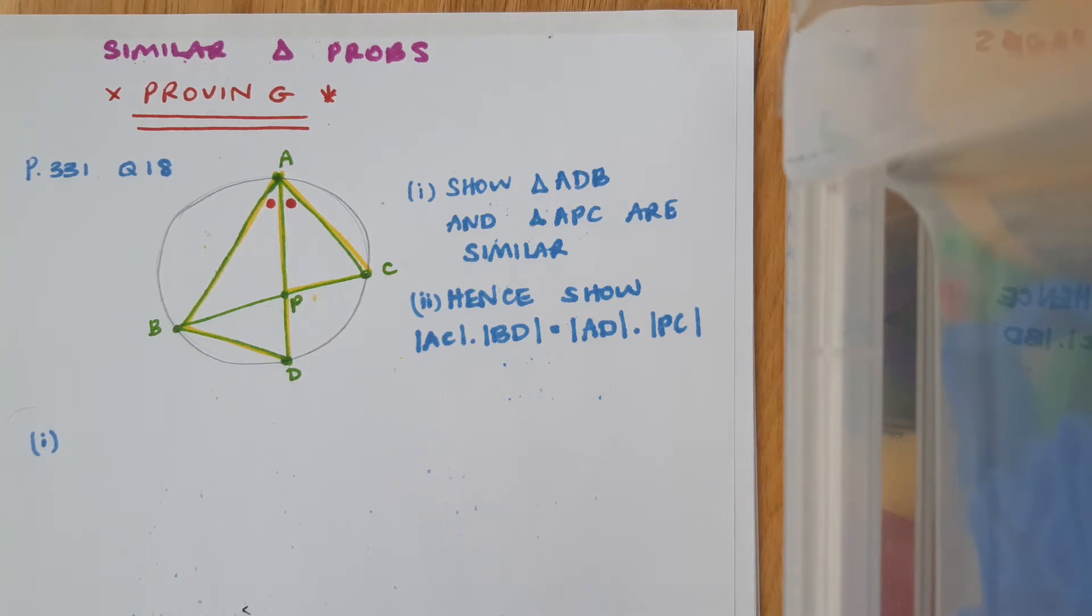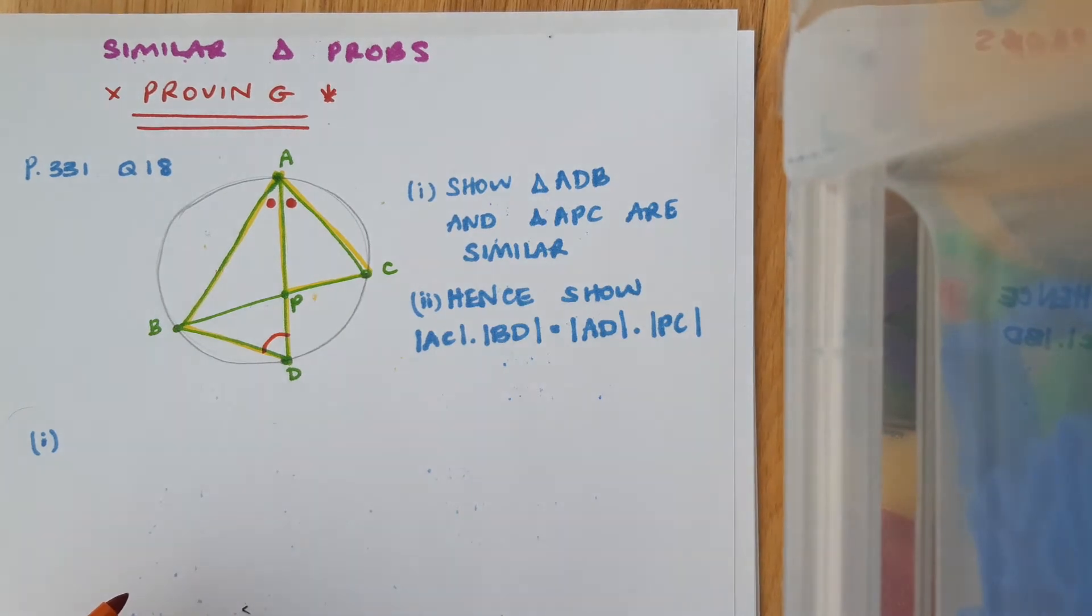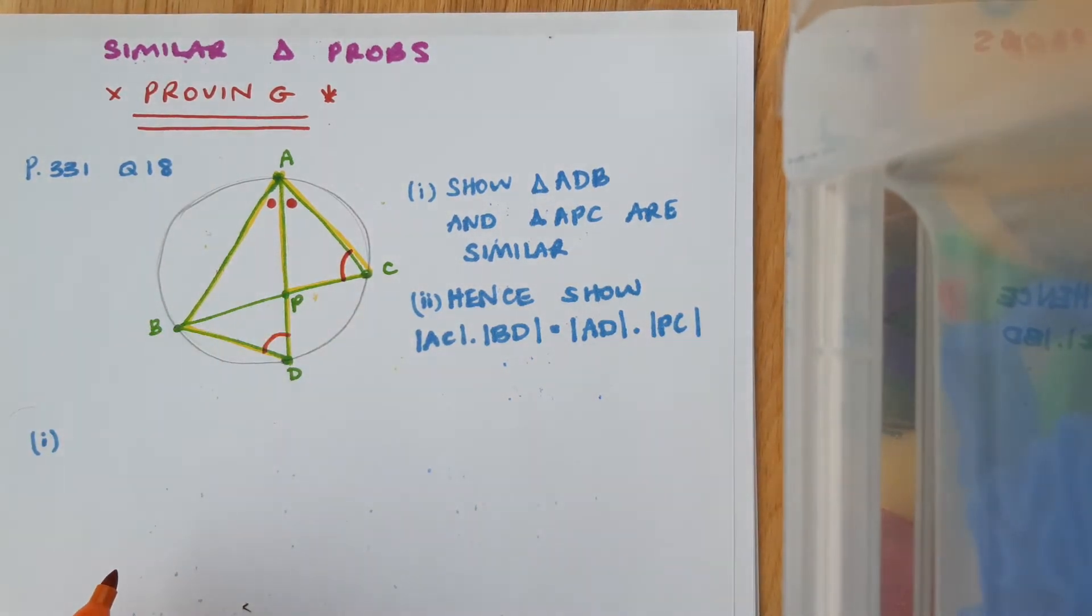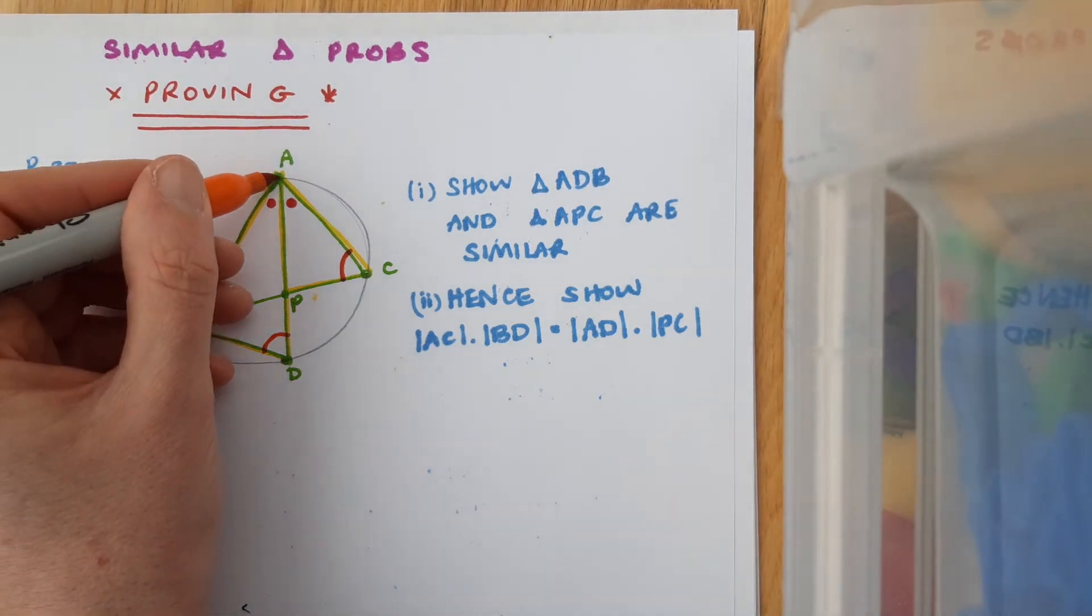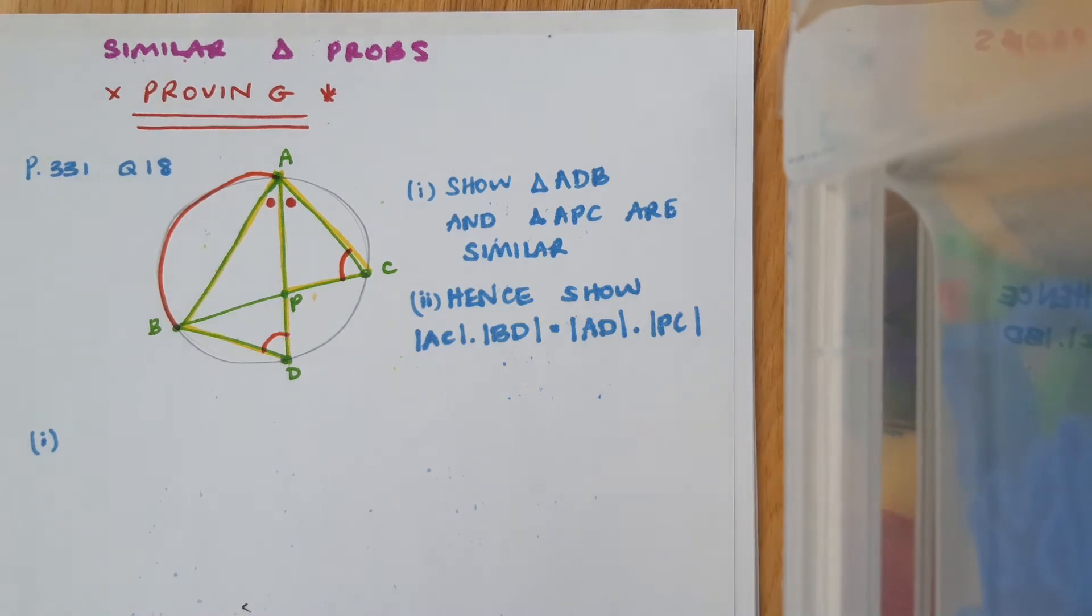In this scenario, what I'm looking at is that the angle at D here, angle BDA, and the angle here at C, angle PCA, are equal. The reason for that is because they're both standing on the same arc, and it might be helpful to actually turn your diagram around in order to be able to see that.